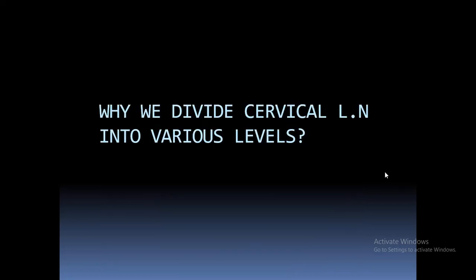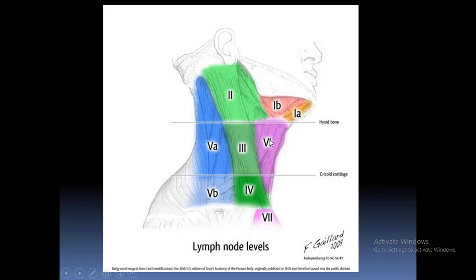Why do we divide the cervical lymph nodes into various levels? This division is very important because different groups of lymph nodes drain certain different areas of the head and neck. For example, if there is a lesion on the tongue, the draining lymph nodes will be levels 1a, 1b, 2, and 3. So if a tongue lesion turns out to be a carcinoma, apart from removing that lesion, we will also have to remove level 1, 2, and 3 lymph nodes in the neck — we call it neck dissection. These lymph node groups are very important because different areas of the head and neck drain into different groups of lymph nodes.